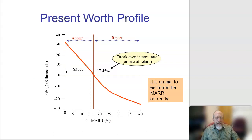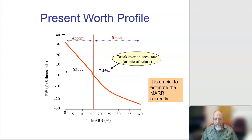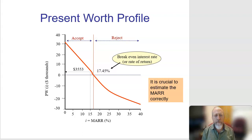If you make the interest rate a variable and plot present worth versus interest rate, you'll find that as the interest rate goes up you're not making money, and as it goes down you are. In this case there is a break-even point at 17.45% where you actually break even. Any MARR less than 17.45% makes it an acceptable project.